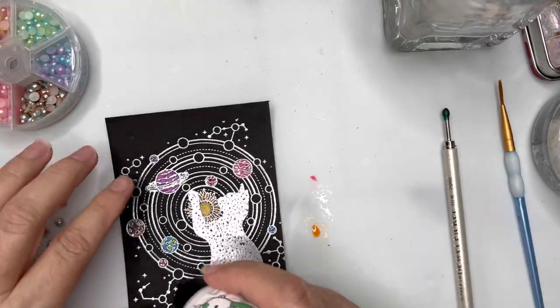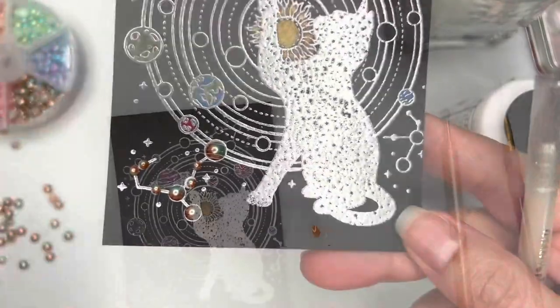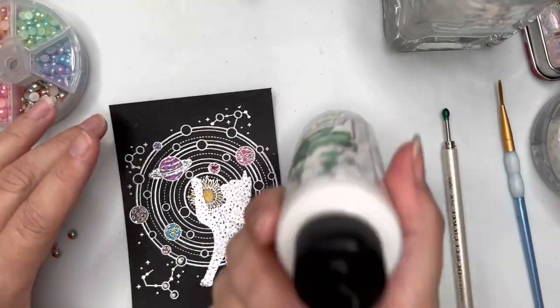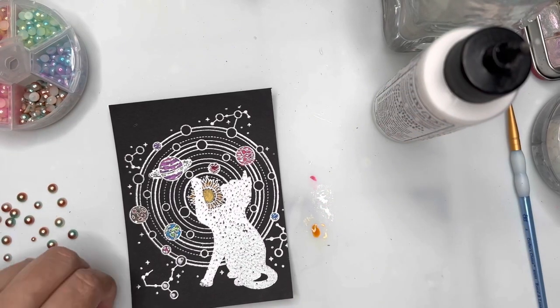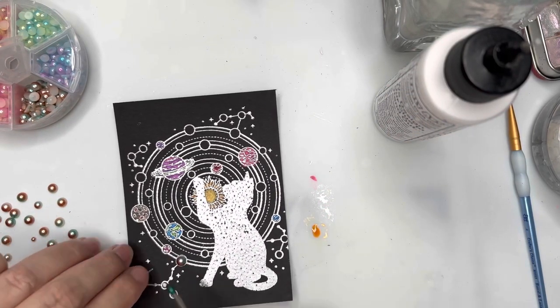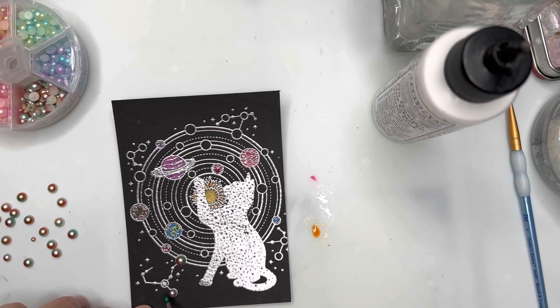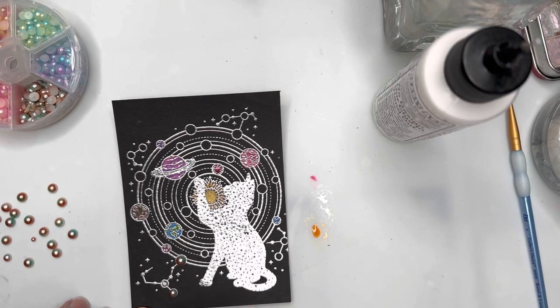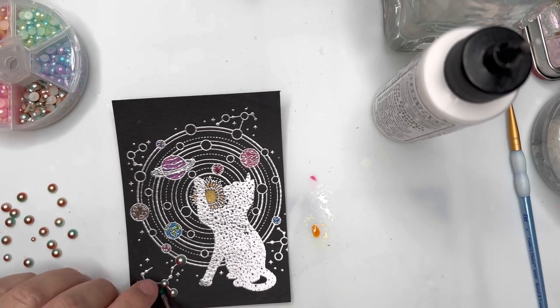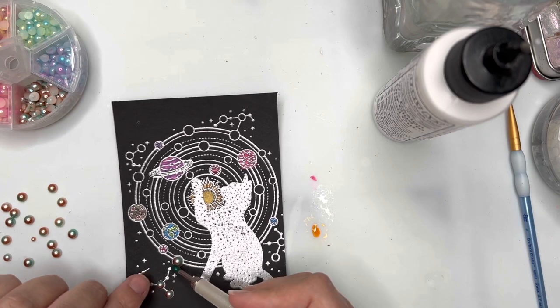Now this is the second panel that I have stamped and heat embossed with silver embossing powder. You can see I've come in with my watercolors and I've already painted in some of the details on the planets as well as the sun.